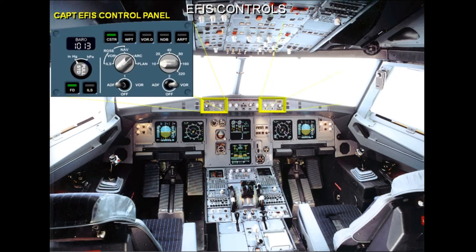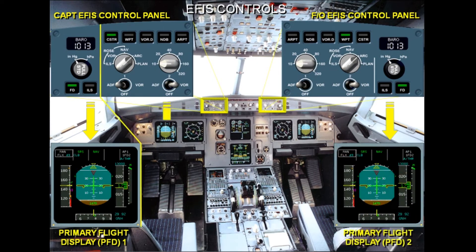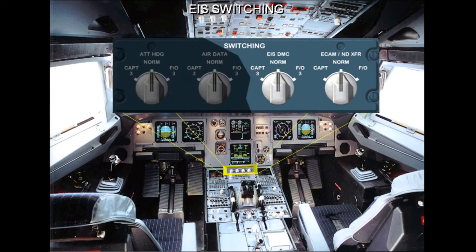Two EFIS control panels are used to select what is displayed on the EFIS screens. The EFIS control panels are divided into two sections: one section associated with the PFD, and the other with the ND. Just below the EFIS screens on the centre pedestal is a switching panel with two rotary selectors to restore data to the EFIS displays in abnormal operation.